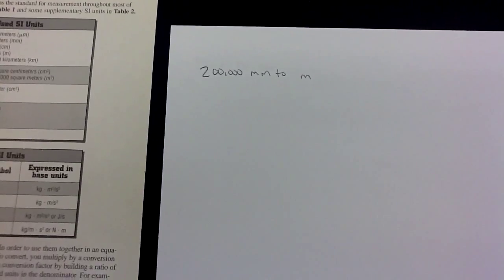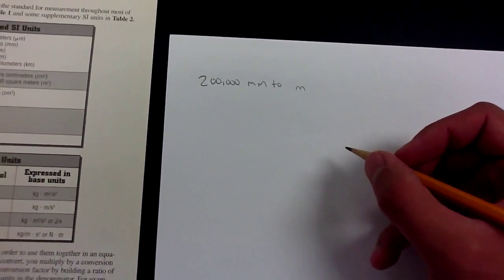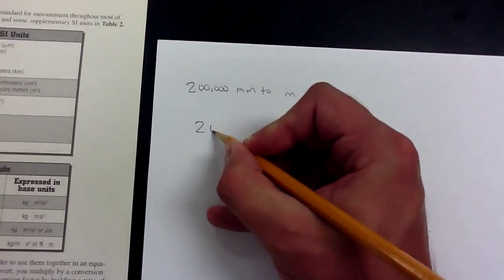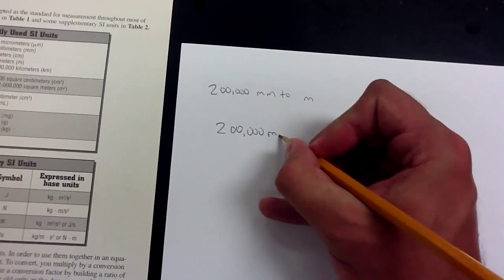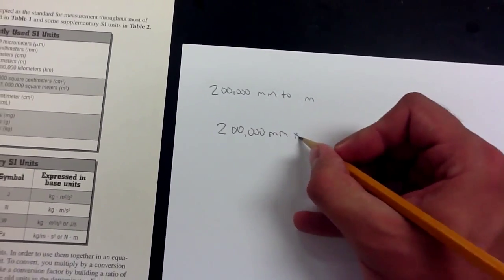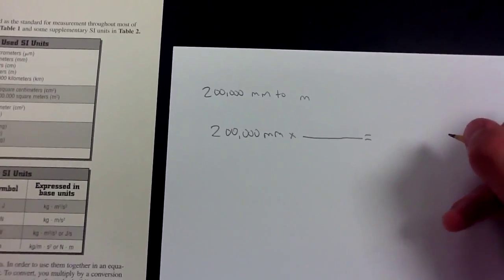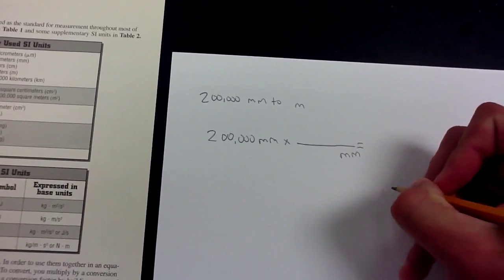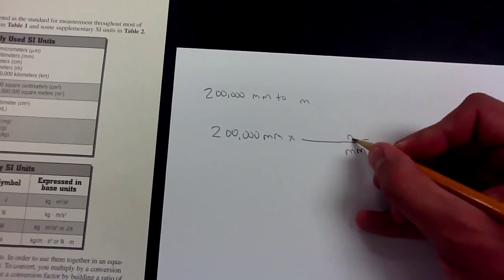Alright, here is how you do it — same thing as before. Take your number and the units you started with and write that down: 200,000 millimeters. Next step, write down the times sign, line, and equal sign. Write what you started with on the bottom — millimeters — and write what you're converting to at the top, which is meters.